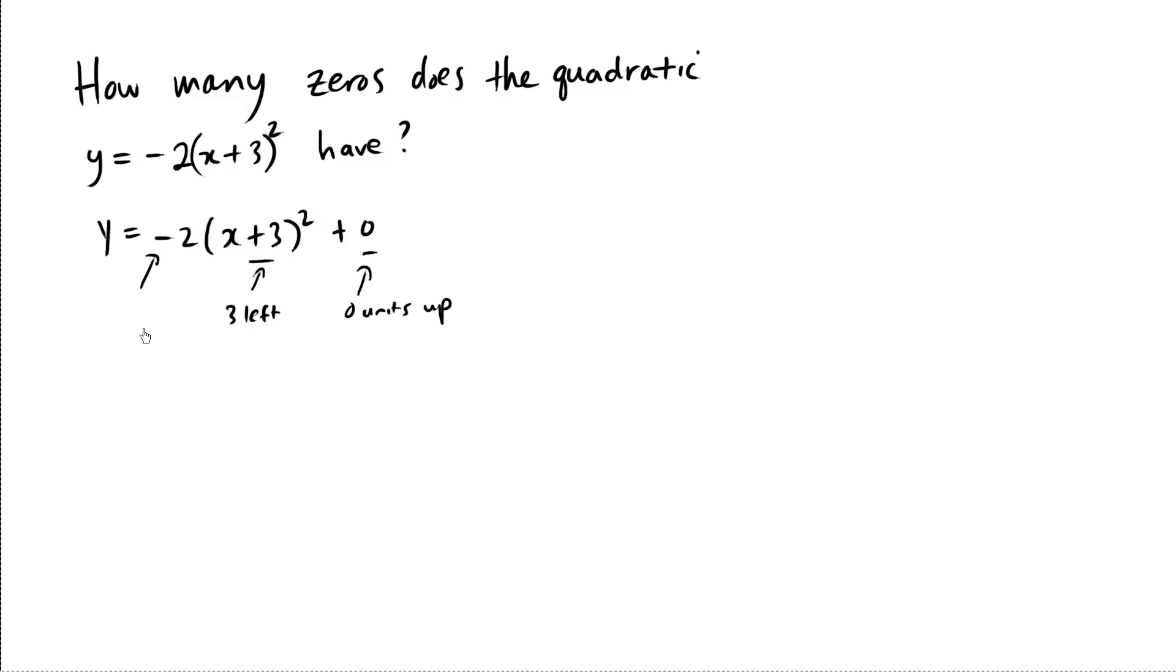The negative sign here means the parabola is actually opening downwards. If the sign was positive, it would be opening upwards like a happy face, but we have a sad face here, downwards.